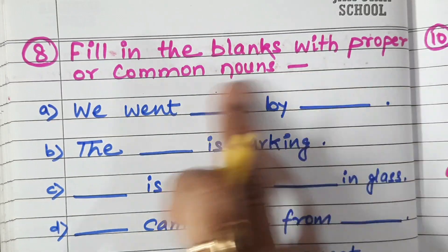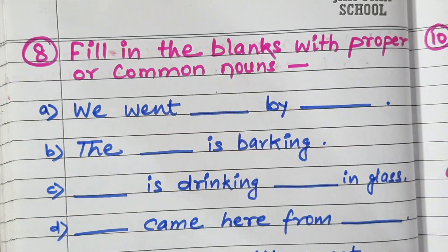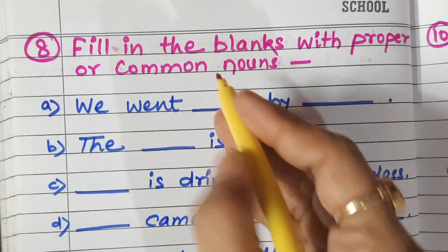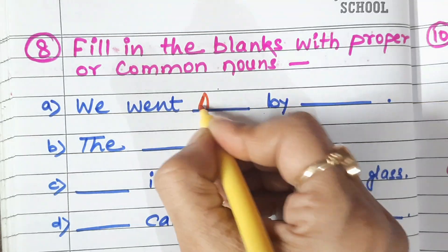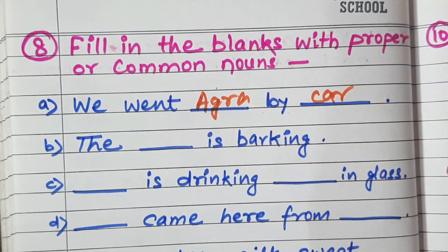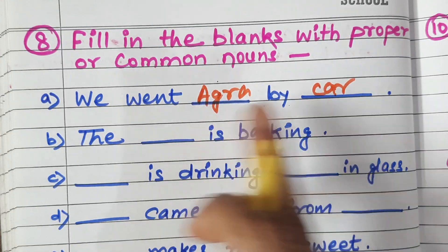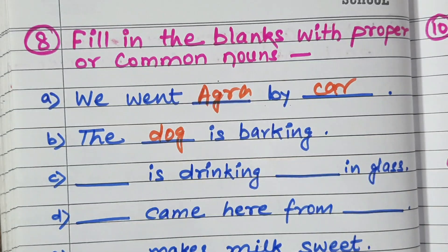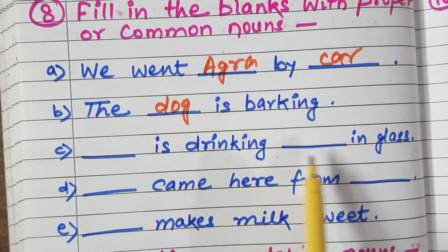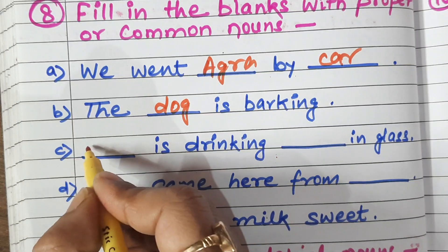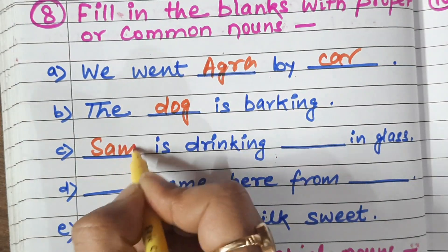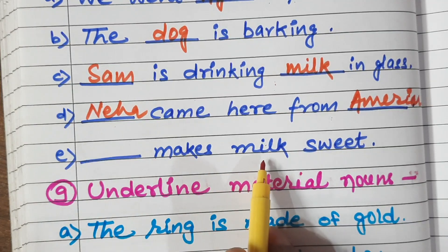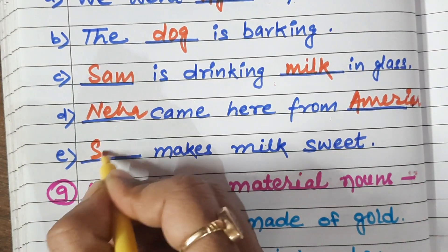Now, fill in the blanks with proper and common nouns. For example: we went to dash by dash — write any city name here, like Agra or Patna, and by car or train. The dash is barking — the dog is barking; 'dog' is a common noun. Dash is drinking dash in the glass — put any proper noun like Sam, drinking milk or juice. Sugar makes milk sweet.